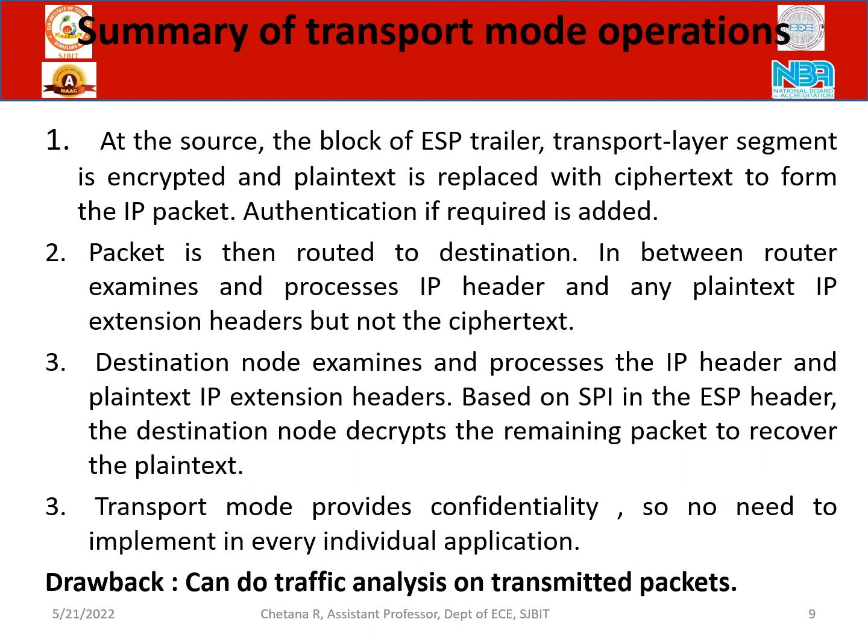Summary of transport mode operations: At the source, the block of the ESP trailer and transport layer segment is encrypted, and the plain text is replaced with ciphertext to form an IP packet. Authentication, if required, is added. There is always a header, a trailer, and an encrypted payload. The packet is then routed to the destination. In between, the router examines and processes the IP header and any plain text IP extension headers, but not the ciphertext.